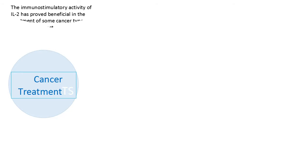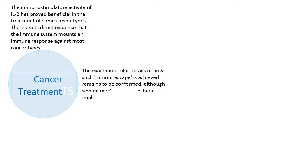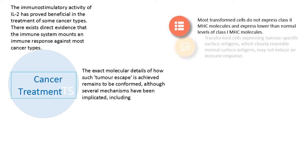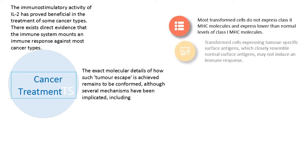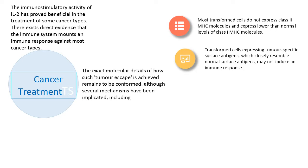The immunostimulatory activity of interleukin-2 has proved beneficial in the treatment of some cancer types. There exists direct evidence that the immune system mounts an immune response against most cancer types. The exact molecular details of how tumor escape is achieved remains to be confirmed, although several mechanisms have been implicated. Most transformed cells do not express class II MHC molecules and express lower-than-normal levels of class I MHC molecules, rendering their detection by immune effector cells more difficult. Treatment with cytokines such as IFN-gamma can induce increased class I MHC expression, which normally promotes increased tumor cell susceptibility to immune destruction.